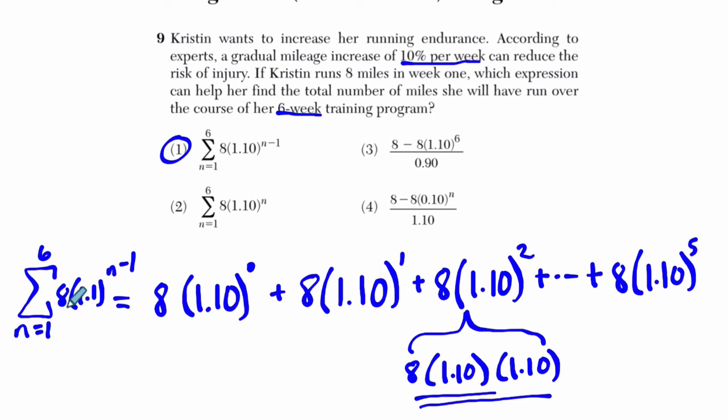If you plug 1 into this equation, 8 times 1.1 to the 1 minus 1 is this 0 right here. Then you plug in 2. It's 8 times 1.1 to the 2 minus 1, which is 8 times 1.1 to the 1. And you keep going. You plug in all the way to the 6 here, which will give you 8 times 1.1 to the 6 minus 1, which is 5, which is our last term here. This is a summation, you're adding up all these terms.